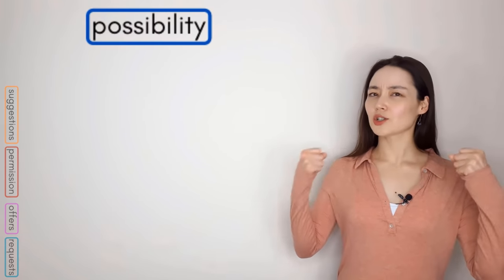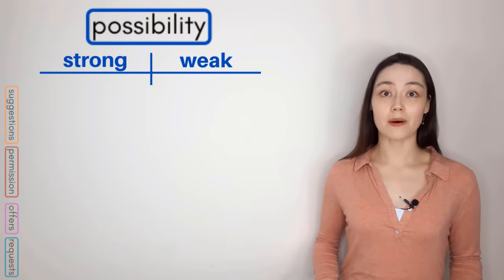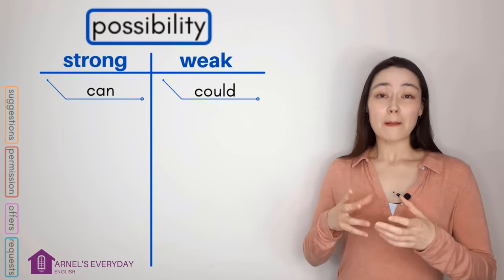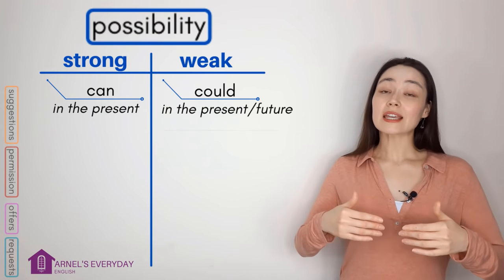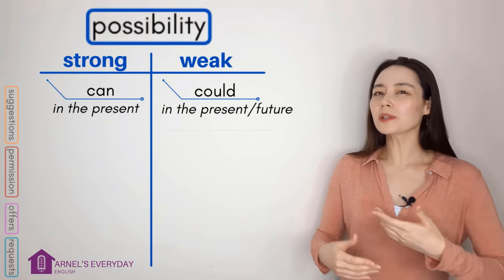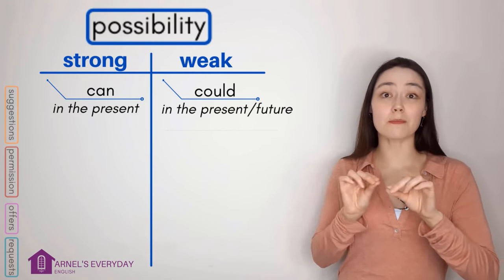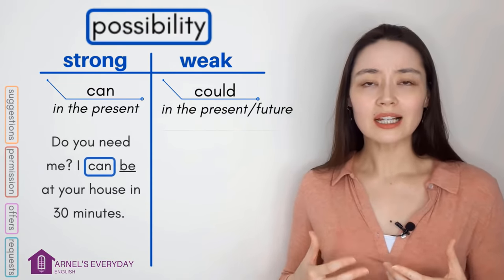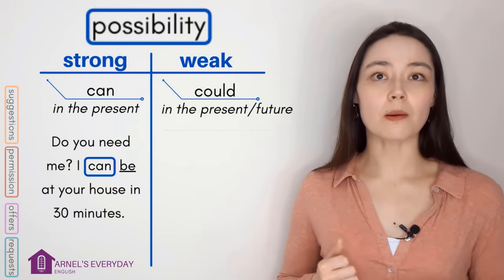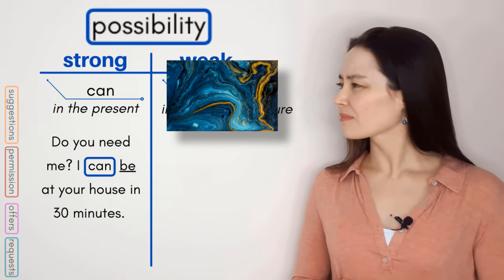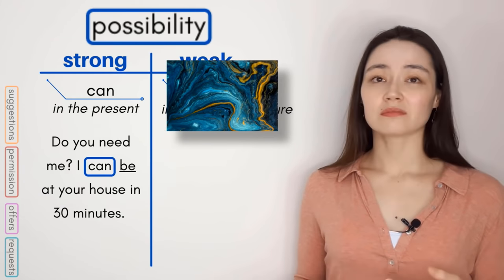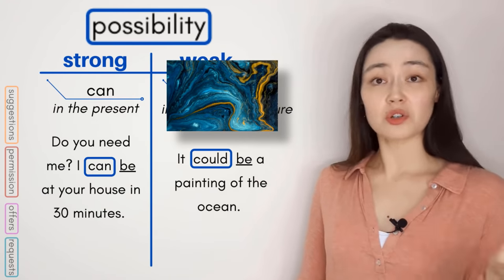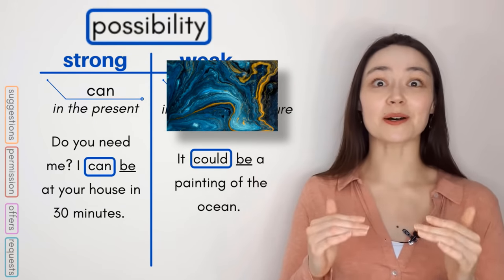Now let's talk about possibility. 'Can' expresses a stronger possibility and 'could' expresses a weaker possibility. Both can refer to the present. If we want to speak about the future, we normally use 'could' — so in this case, could is not about the past. For example: 'Do you need me? I can be at your house in 30 minutes' — strong possibility. 'What is this supposed to be? I don't know — it could be a painting of the ocean' — weaker possibility, a maybe.